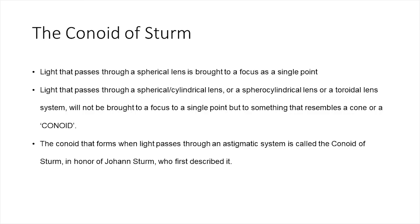But first, a few basics. We all know that when light passes through a spherical lens, it is brought to a focus at its focal length as a single point. In a spherocylindrical lens, the light will not be focused to a single point, but into a conoid. And this conoid that forms when light passes through an astigmatic system is called the conoid of Sturm, in honor of Johann Sturm, who first described it.